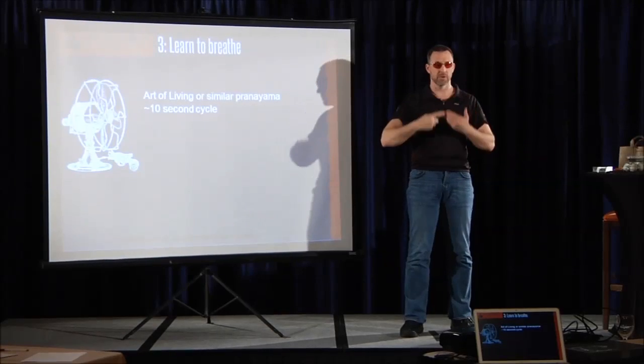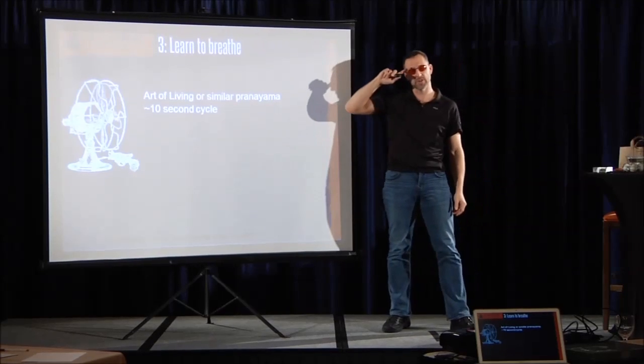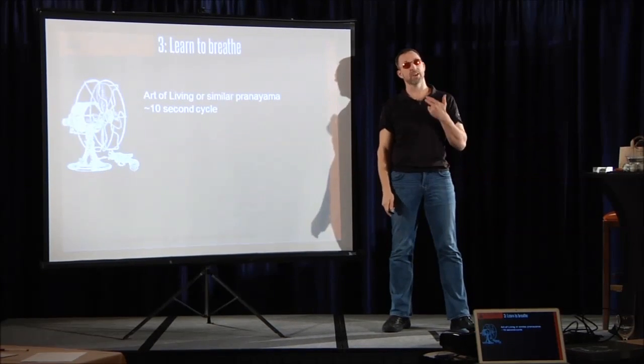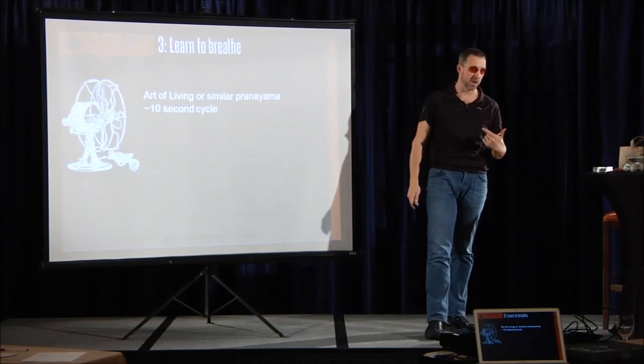Even just breathing in and then breathing out for five seconds in, five seconds out will change the alpha in the front of your brain. Feeling nervous before you approach someone? Five seconds in, five seconds out. That's going to help. In through the nose, out through the mouth.